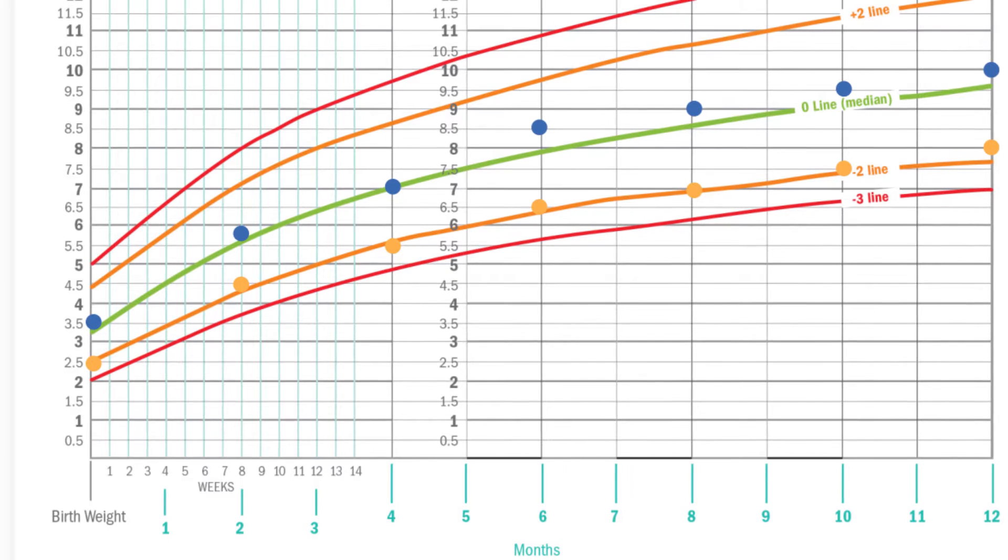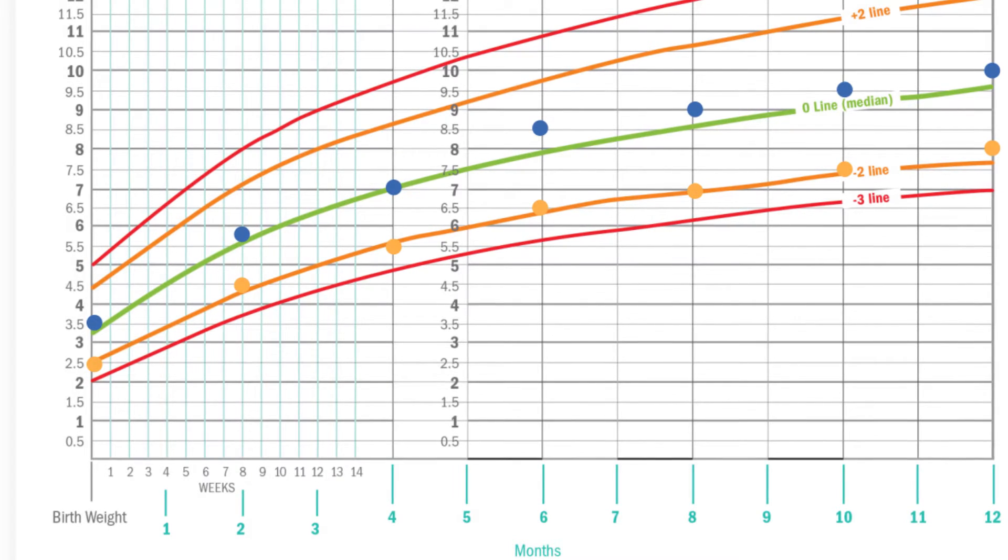But now, let's look at what happens to these two children after one year of age. The blue child, who weighed 10 kilograms at age 1, didn't gain any weight in the next six months.